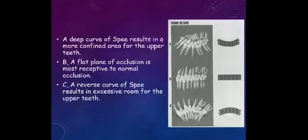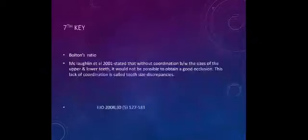The seventh key was given by McLaughlin, and that is Bolton's ratio. According to him, he stated that without coordination between the sizes of the upper and lower teeth, it would not be possible to obtain a good occlusion. This lack of coordination is known as tooth size discrepancy.